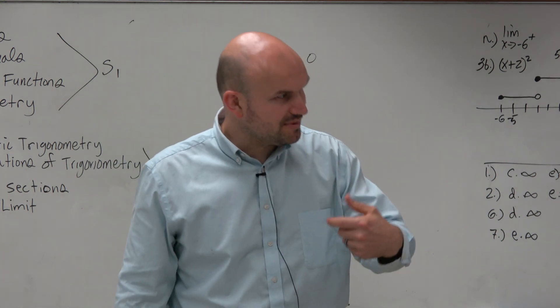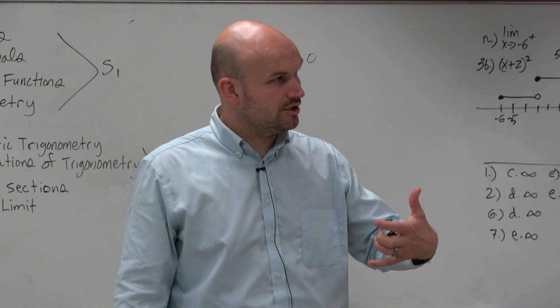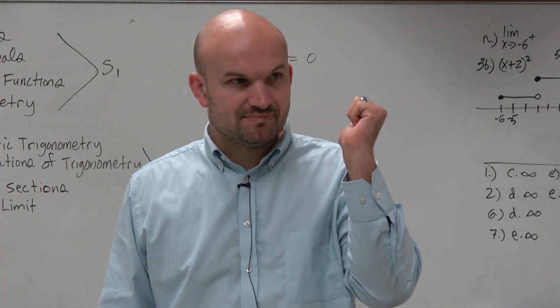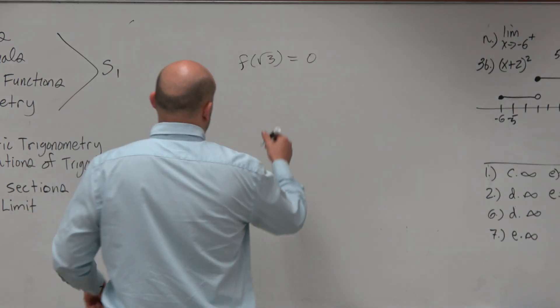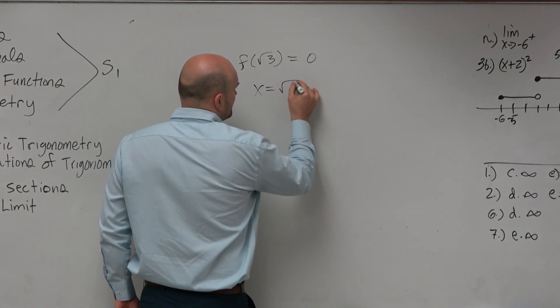Now there's something that we talked about as far as our characteristics of polynomials. When we know f of something was equal to 0, what does that tell us about x equal to square root of 3?